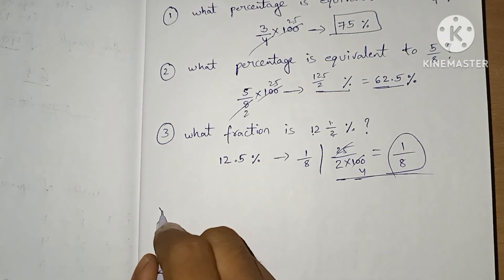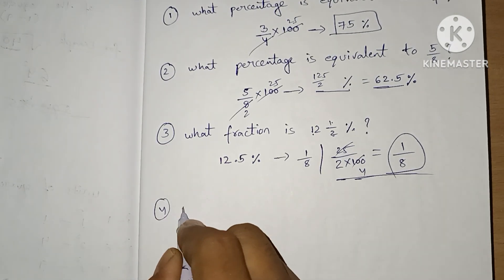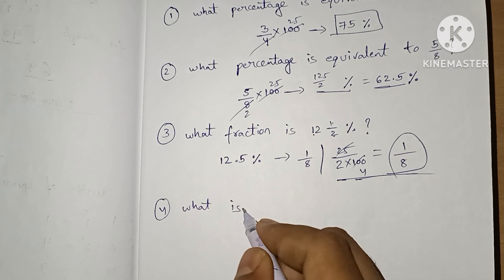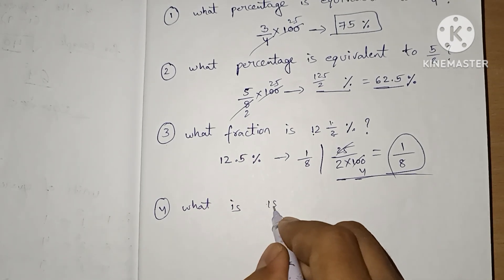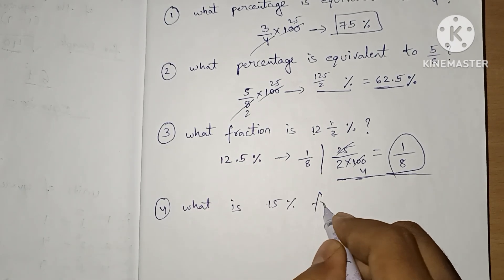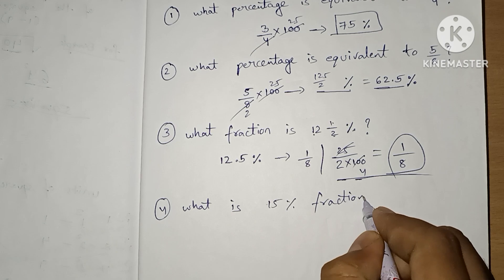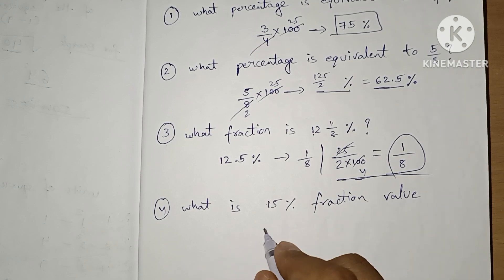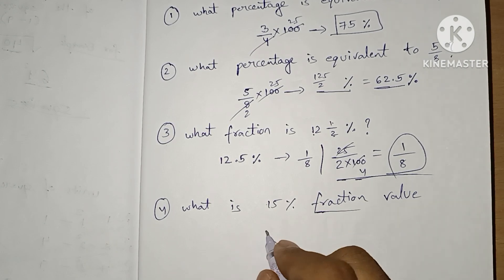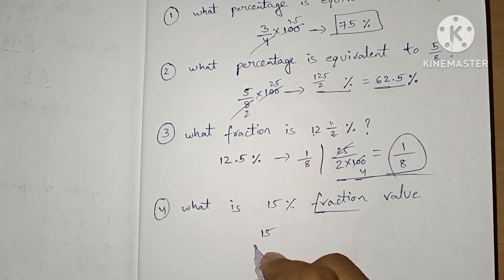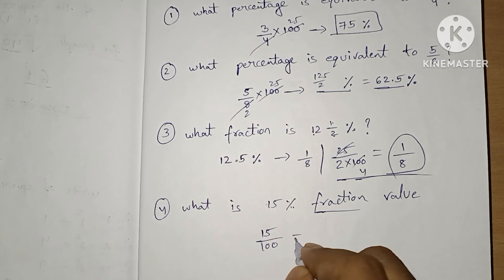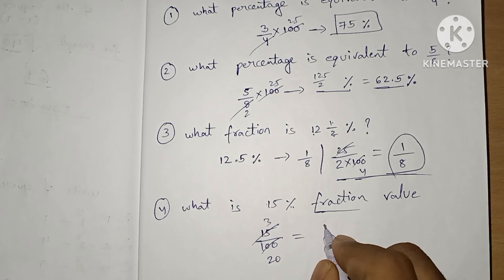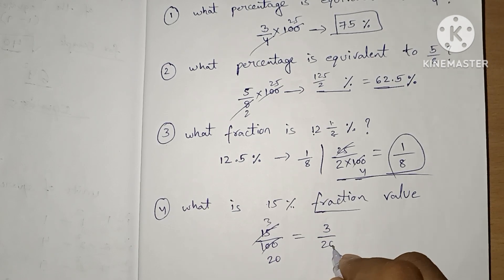Let's see one more question. What is the fraction value of 15%? To find the fraction value, 15% means divide by 100. 5 goes 3 times into 15, and 5 goes 20 times into 100. So the fraction value will be 3/20.